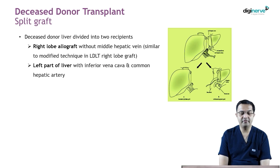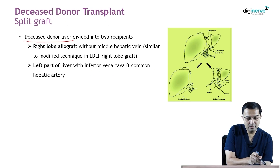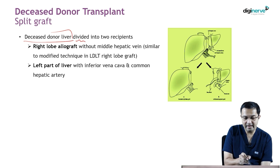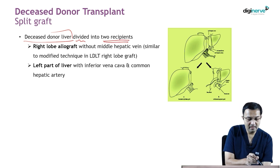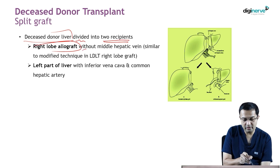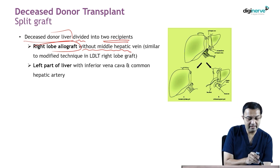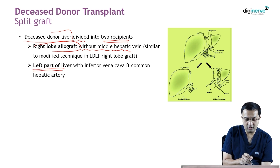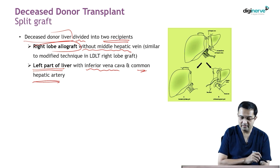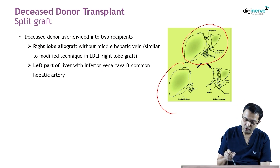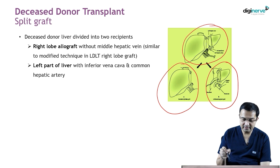What is a split graft in deceased donor liver transplantation? Here the deceased donor liver is divided and used in two recipients. The right lobe allograft without the middle hepatic vein is generally transplanted to an adult patient, while the left part — taken along with the infra-vena cava and common hepatic artery — is generally given to a child.